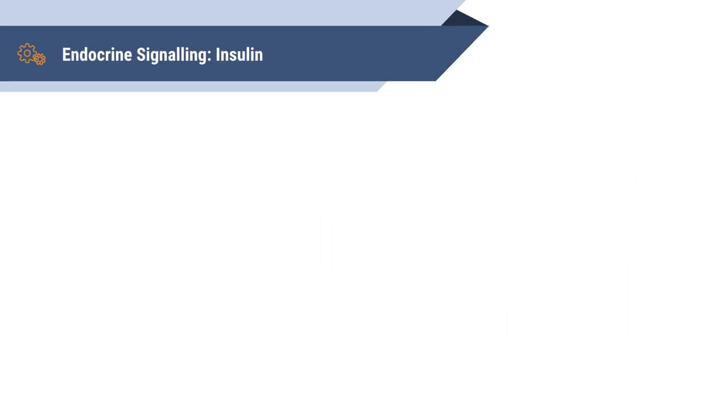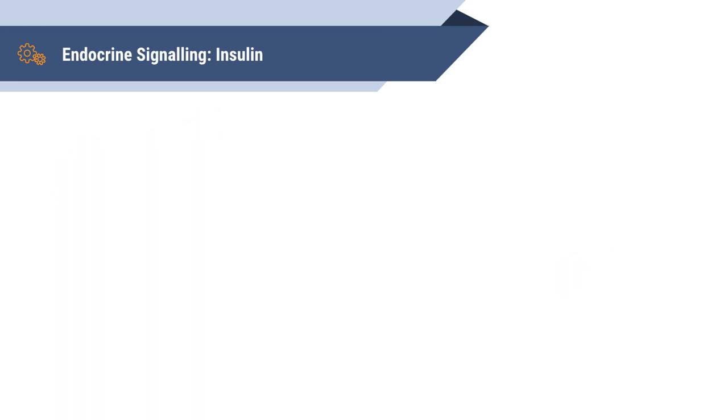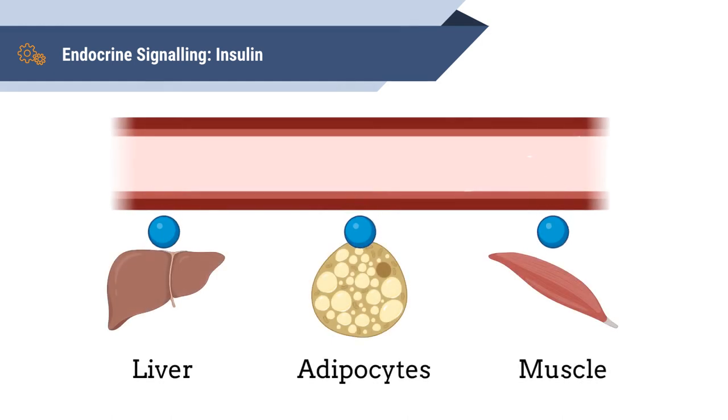Cell signaling in the endocrine system all follow similar processes. Let's dive into a specific example to take a closer look at the mechanisms involved. Insulin is a hormone that is produced by beta cells in the pancreas and is released when there is increased glucose in the bloodstream. The function of insulin is to promote the absorption of glucose.